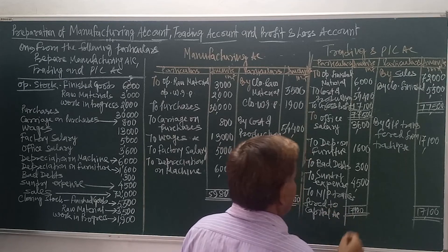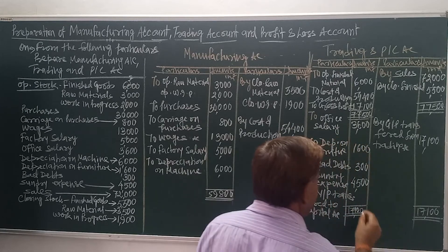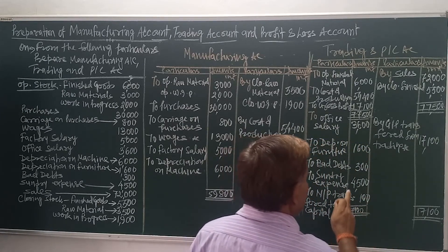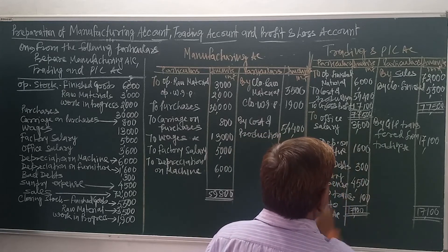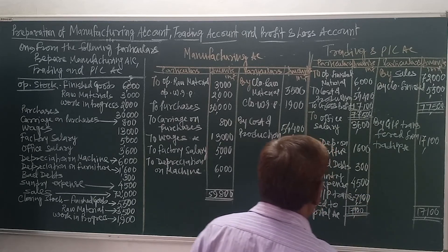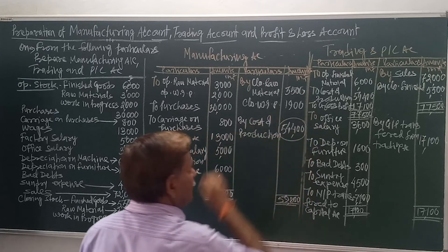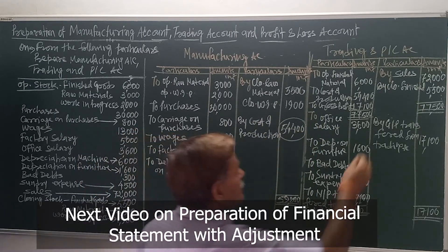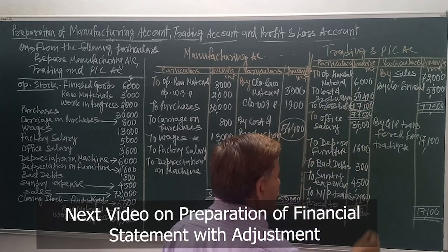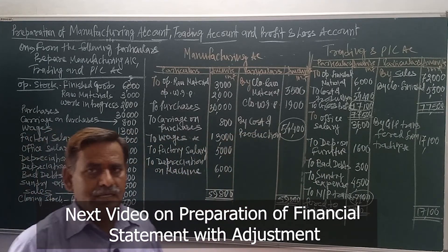Finally, we will now find the difference of the P&L account as well. The credit total should come to 17,100. Credit is more, so the difference will come on the debit side, and that difference will be named net profit — transfer to capital account. The difference gives us 7,100 as our net profit. So our three results are: cost of production — 54,400; gross profit — 17,100; and net profit — 7,100.